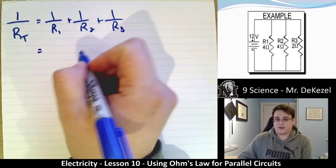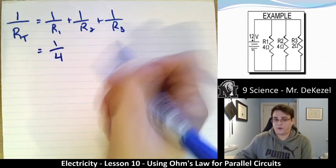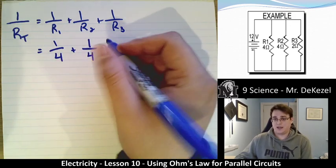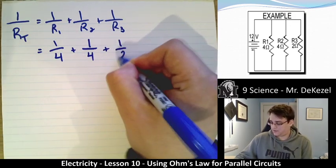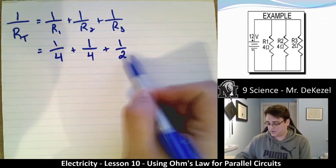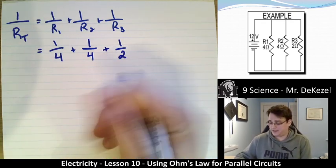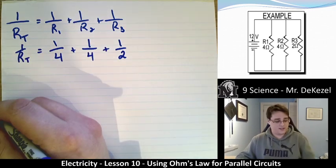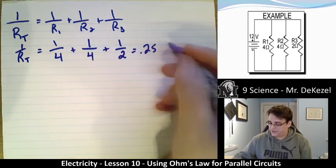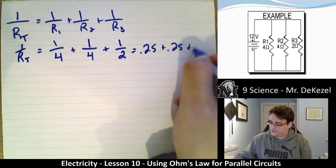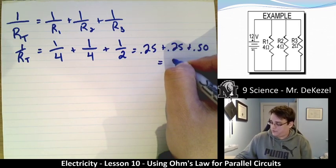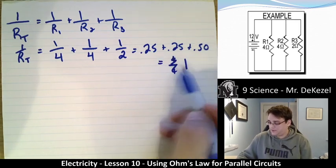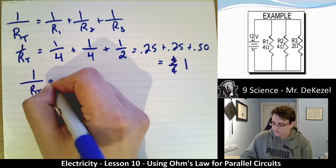So let's plug this in. R1 is given as 4, so we have 1 over 4, plus 1 over the second resistor which is also 4, plus 1 over the third resistor which has resistance 2, so that is 1 over 2. I can plug these into my calculator and add them up to find 1 over the total resistance. So 1/4 gives 0.25, plus 0.25, plus 0.50 for a half, for a total of 1. So 1 over the total resistance is equal to 1.